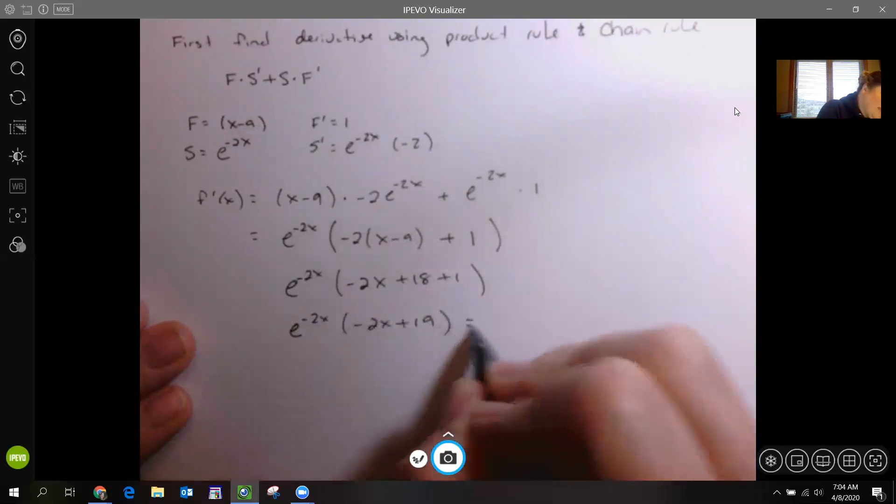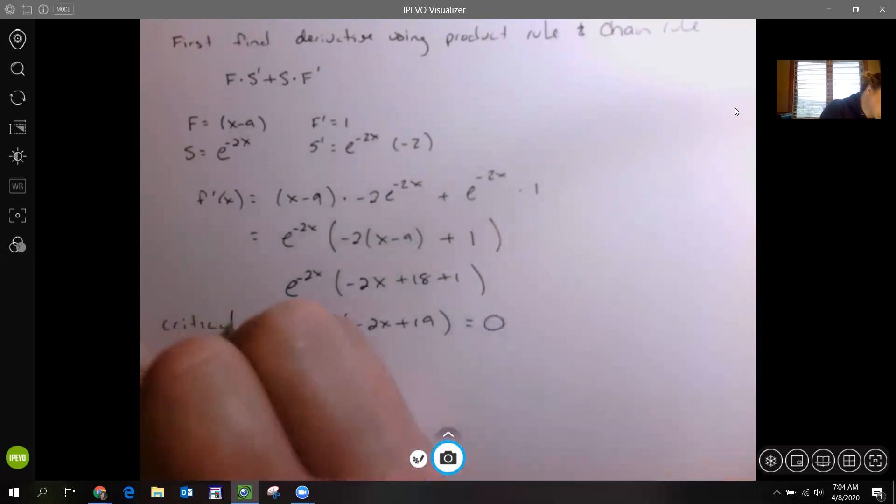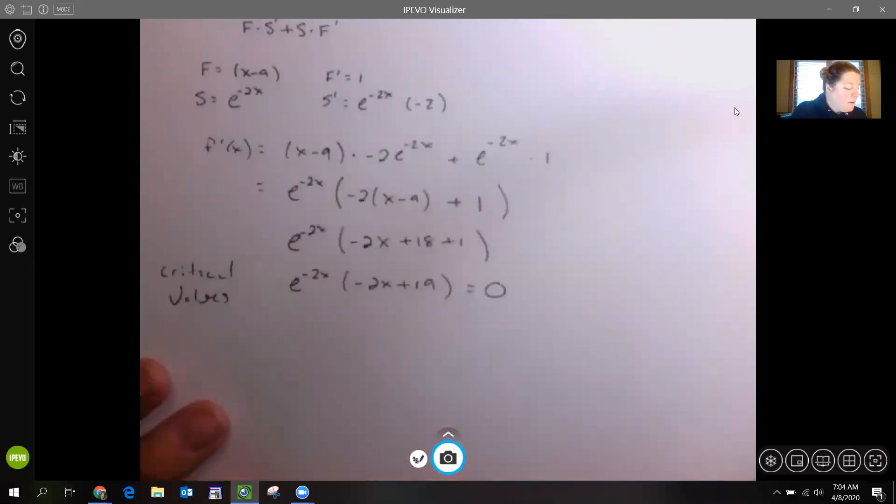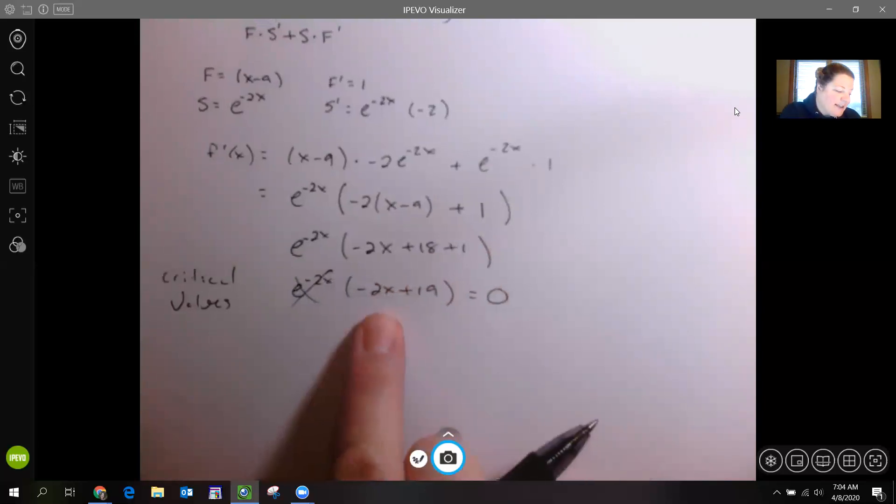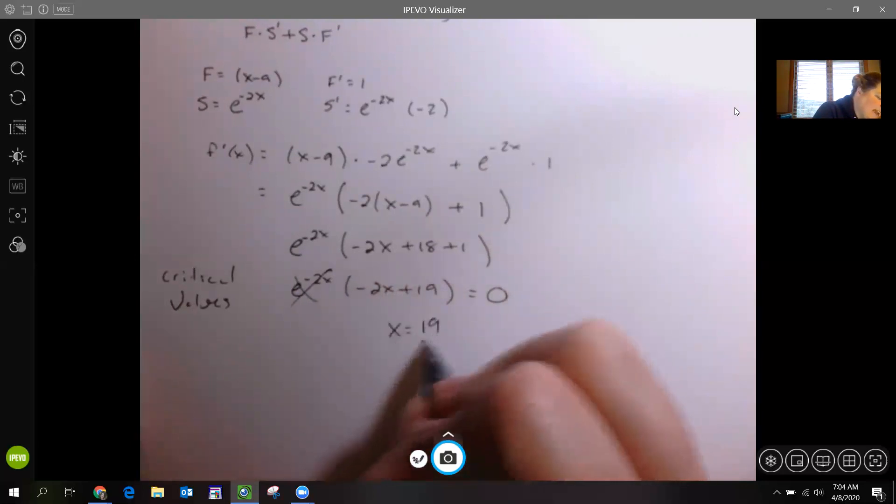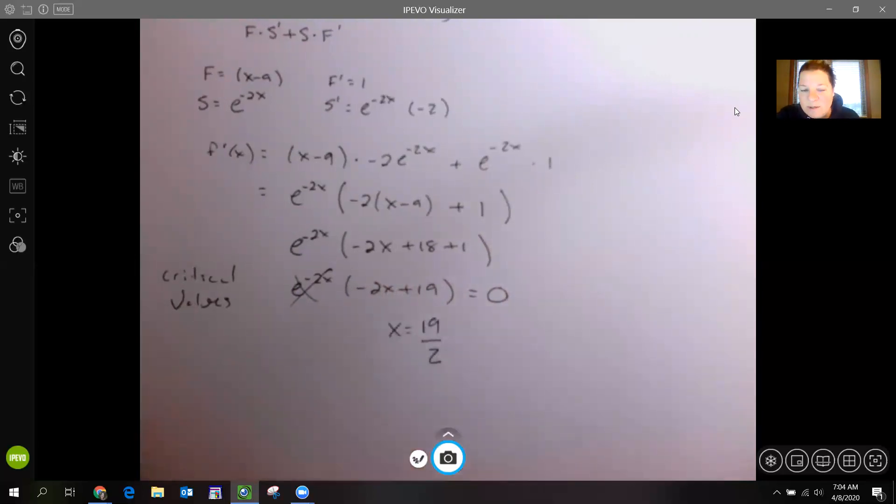We want to find where it equals 0. Well, this part can't equal 0, so it kind of just dropped off. It can't give us a solution, so this part can. You should see it's negative 19 over negative 2, or 19/2. So x equals 19/2. Our one critical value is at that point.